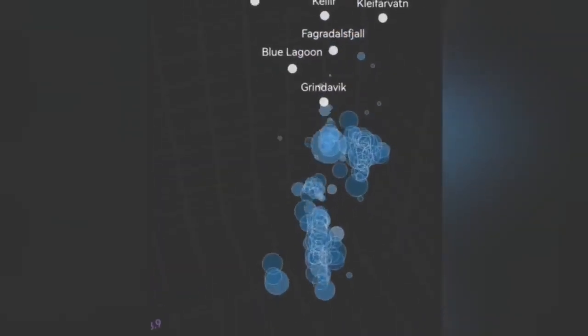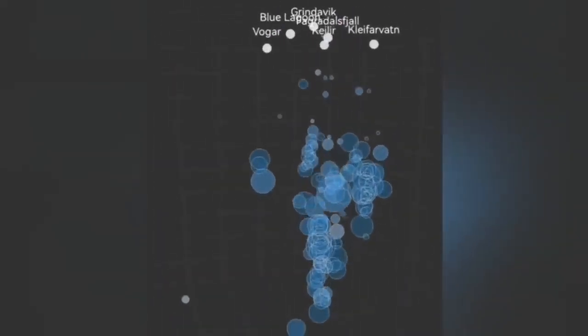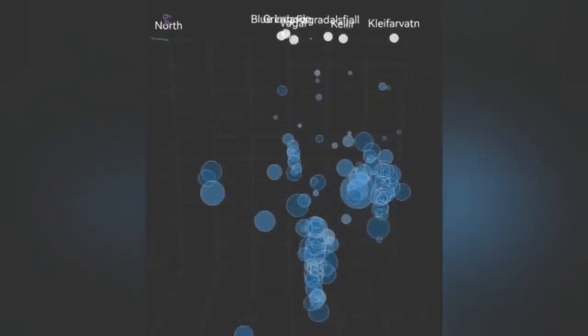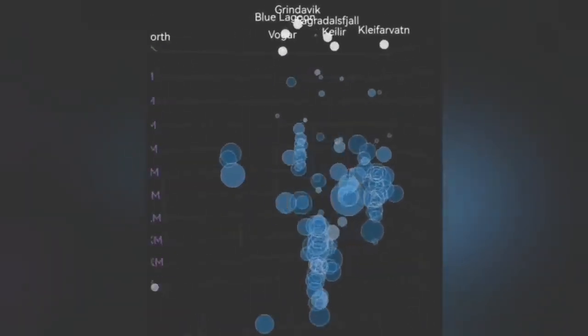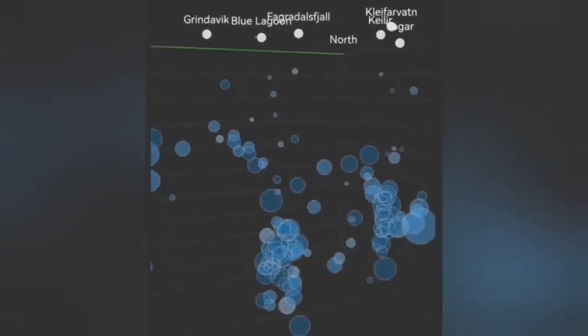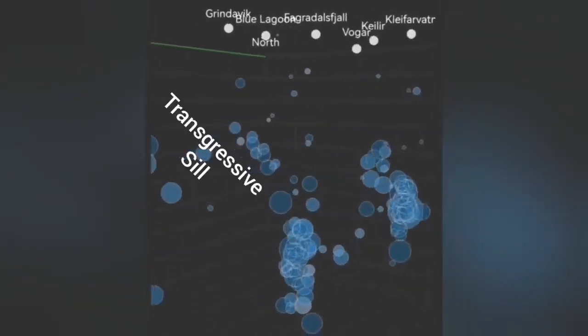For example, when I look at the earthquake depth chart, you can see a tongue of earthquakes at an angle moving from what is practically under the Svartsengi toward Grindavik.